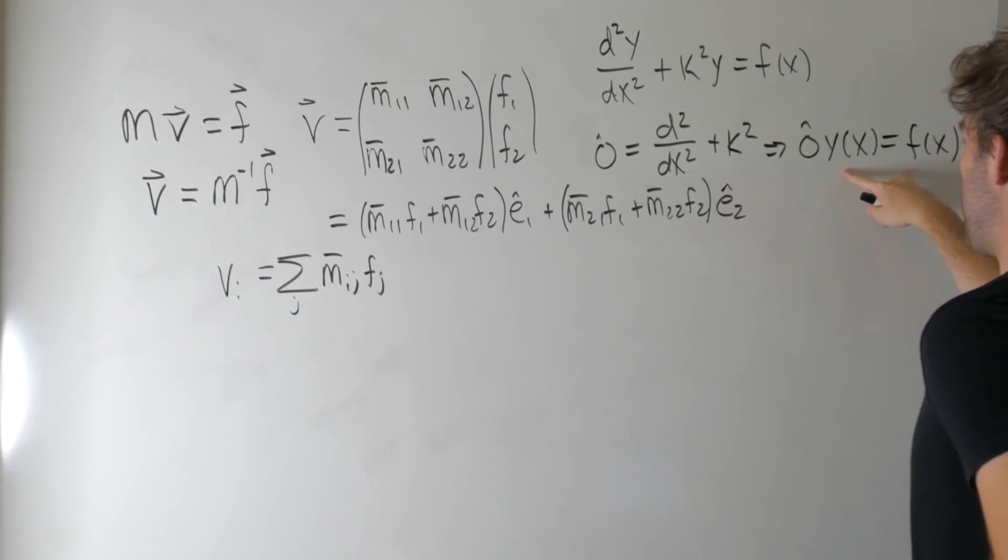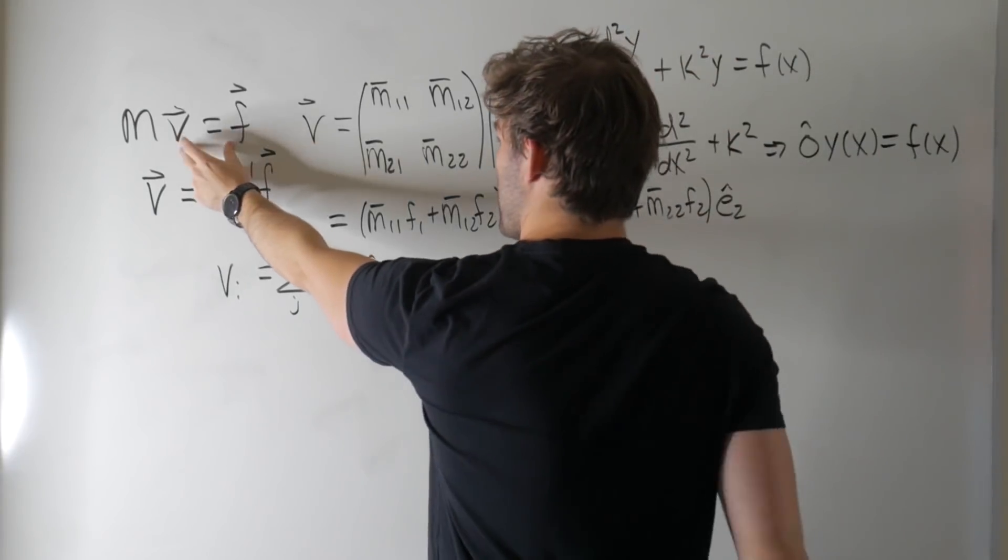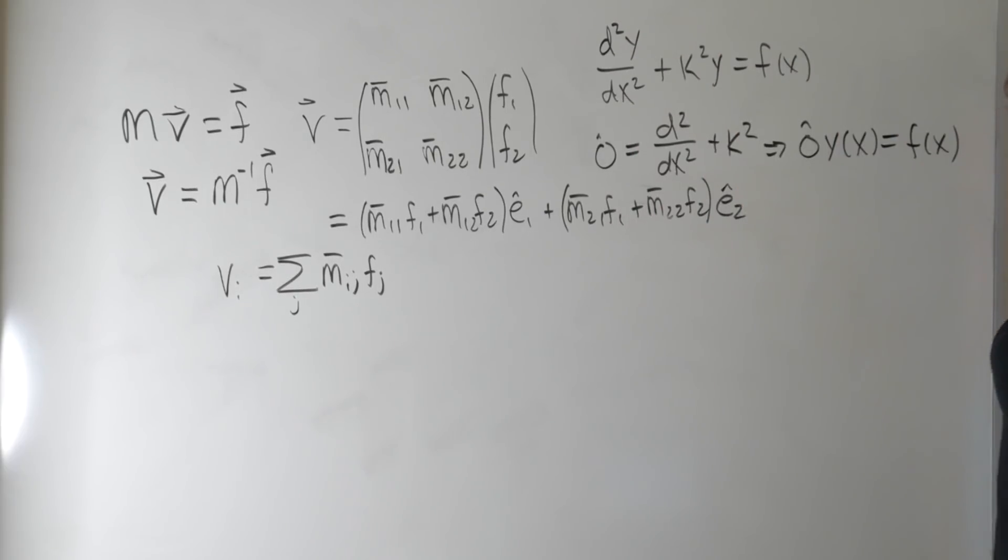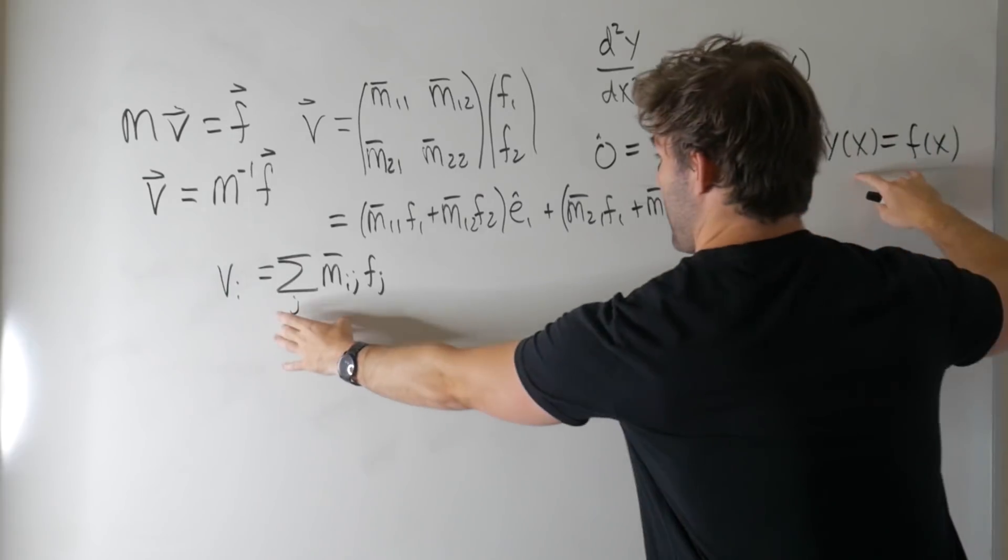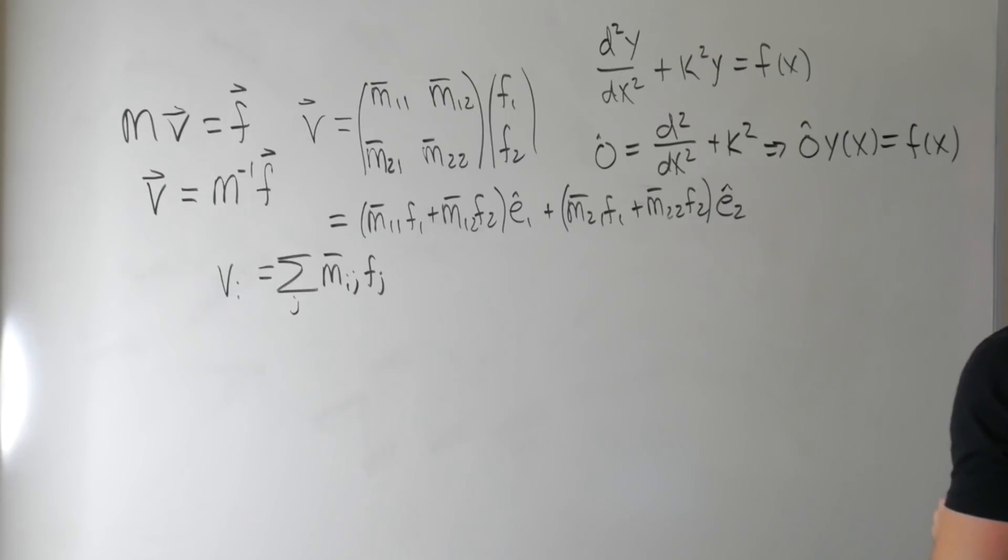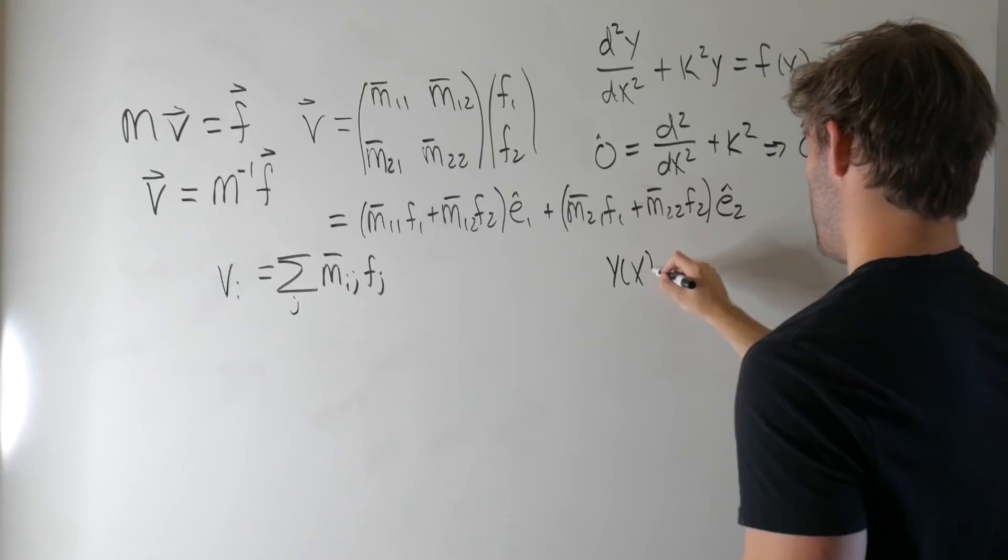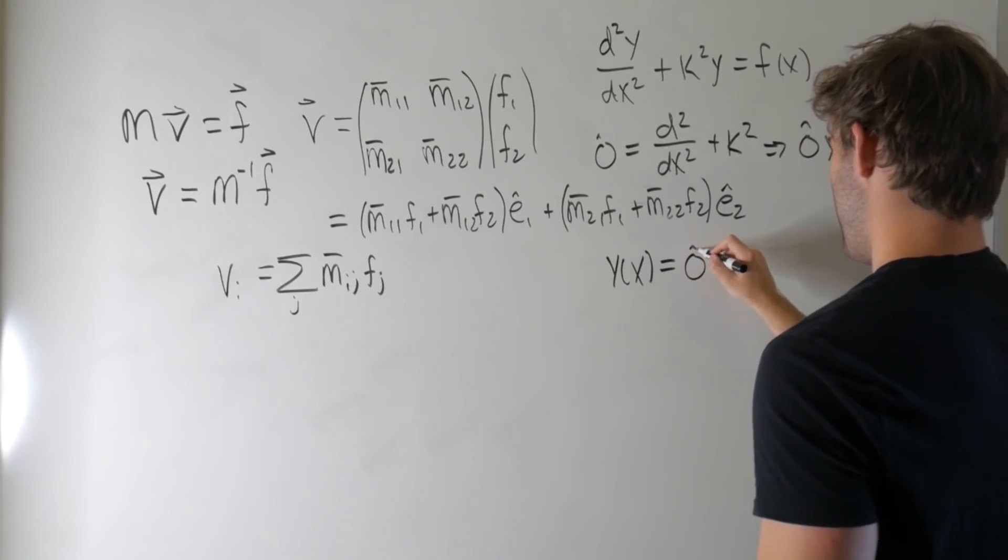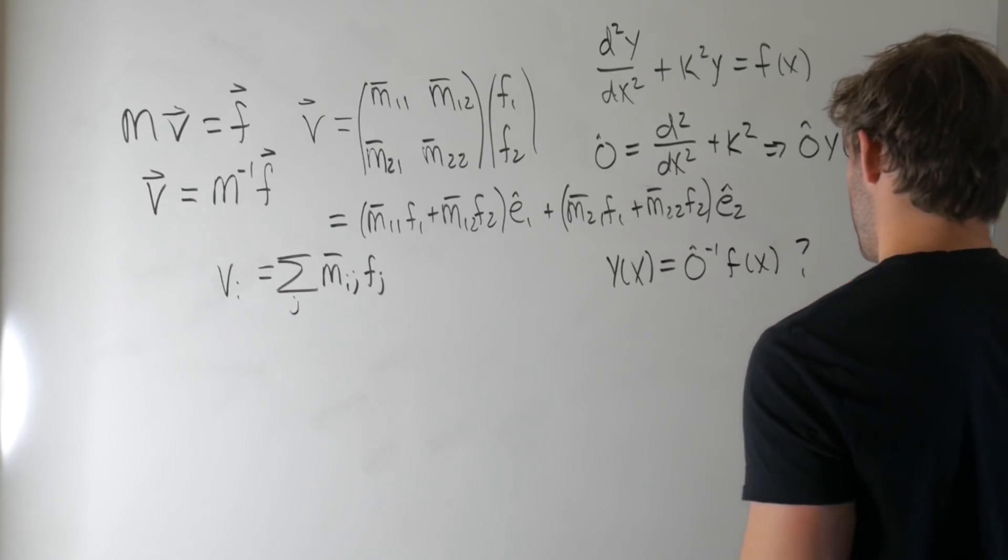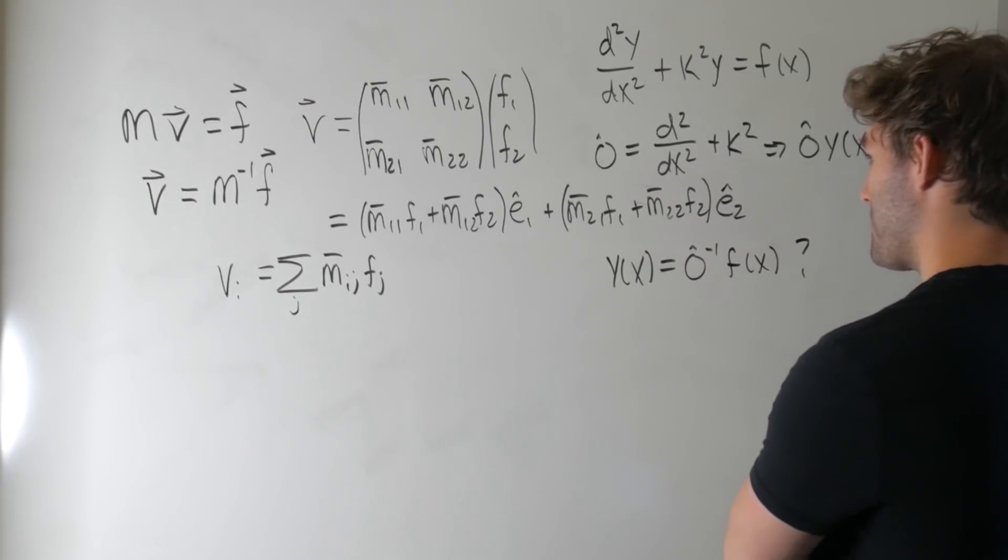But this looks an awful lot similar to this equation here. There, we're dealing with vectors, and here we're dealing with a scalar function, so it looks really more like this than anything, because this is just a component of the vector, which would be a scalar. So then you're tempted to ask, well, what is the inverse of an operator? Can I say that Y of X is equal to whatever this inverse operator is acting on F of X? And the answer is, yeah, sometimes. Sometimes you can.